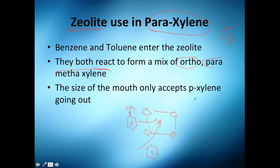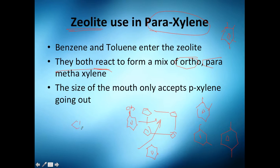Remember: ortho-xylene is this one right here, para-xylene is this one right here, and meta-xylene is this one right here. Essentially they have the same formula — two methyl groups on a benzene ring — just in different positions.